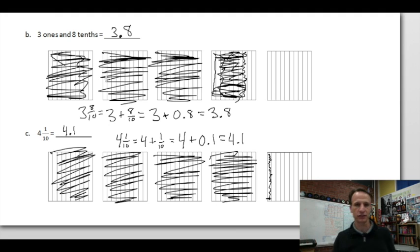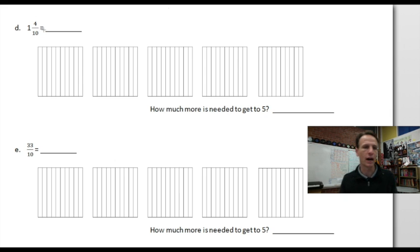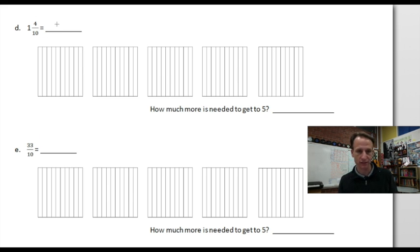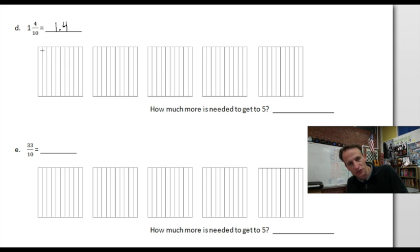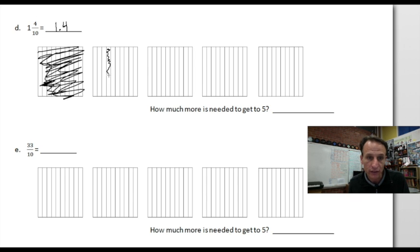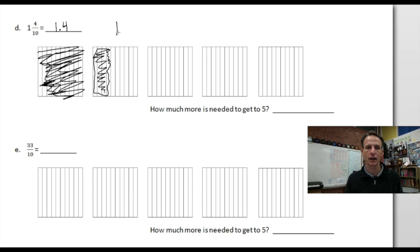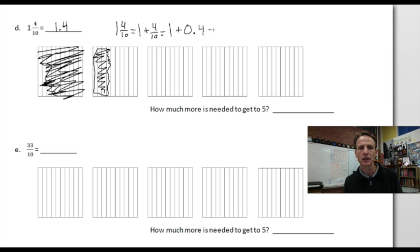Now we have two more. Here we're given a mixed number and also an improper fraction. One and four tenths written as a decimal is one and four tenths — one point four. Drawing the model with one whole and four tenths delineated. As a mixed number: one and four tenths, decomposed as the whole number plus the fraction; one tenth in decimal form is zero point four, and combined we get what we already knew: one and four tenths.